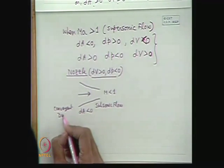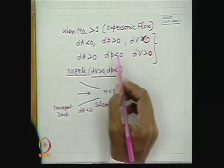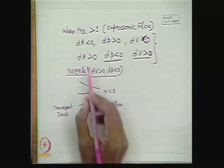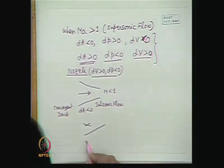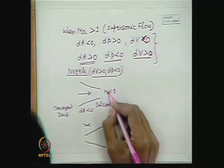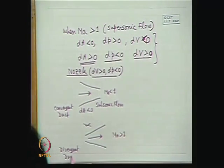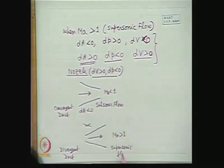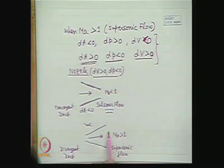In supersonic flow (M > 1), the decrease of pressure and increase of velocity occur when dA > 0. So for supersonic flow, a divergent duct acts as a nozzle. Therefore, while a convergent duct acts as a nozzle in subsonic flow, a divergent duct acts as a supersonic nozzle in supersonic flow.